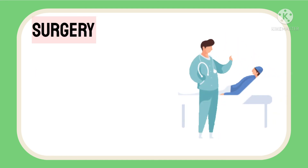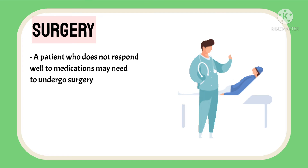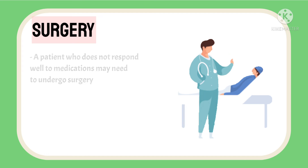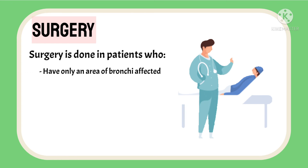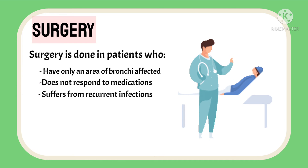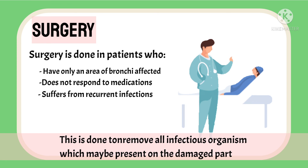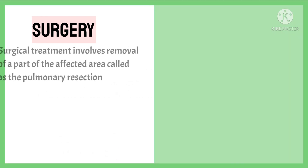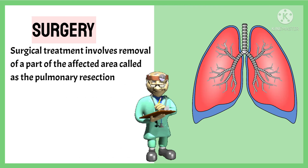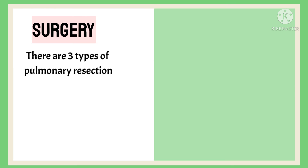A patient who does not respond well to medications may need surgical treatment. Surgery is done in patients who have only a localized area of the bronchi affected, who do not respond to medications, and who suffer from recurrent infections decreasing their quality of life. This is done to remove the infectious source from the damaged part. Surgical treatment involves removal of the affected area, called pulmonary resection surgery. There are three types: lobectomy, segmentectomy, and pneumonectomy.